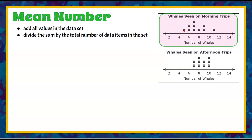We need to add these together, so we need to understand how to read a line plot. This data item represents five whales seen on one morning trip, then six and six, seven, seven, seven, eight, nine, and eleven. Counting those up, we have ten data points — so there were ten different whale watching trips in the morning, and this is the number of whales seen on each of those ten trips.